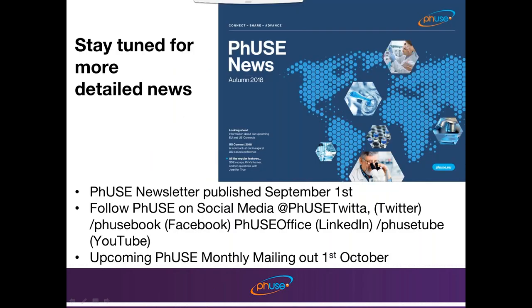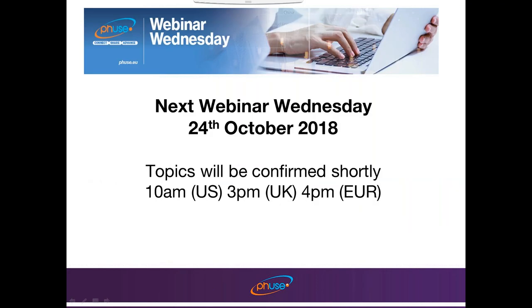The autumn FUSE news were published on September 1st. You will find them on our FUSE website. We are working on a new publication method to get the FUSE newsletter to you in a better format than PDF, which will be implemented with the FUSE news for the winter edition. You can follow FUSE on Twitter, Facebook, LinkedIn, and also YouTube, where we will also post the recording of this video. There will be an upcoming FUSE monthly mailing on October 1st, and an upcoming Webinar Wednesday on October 24th.